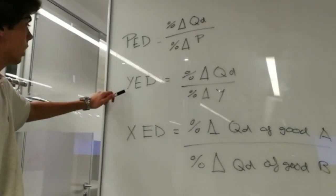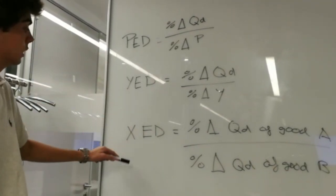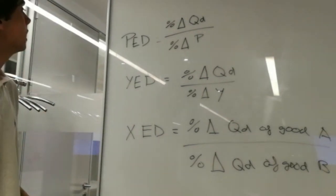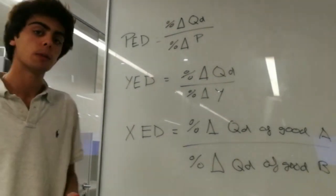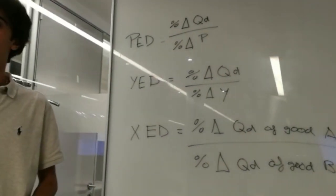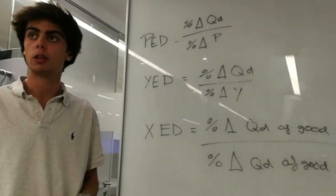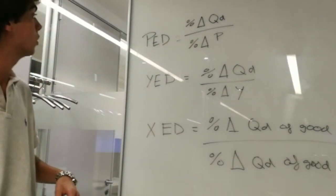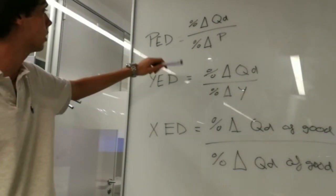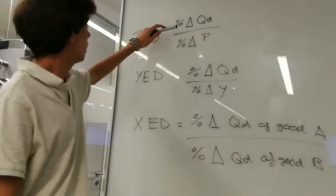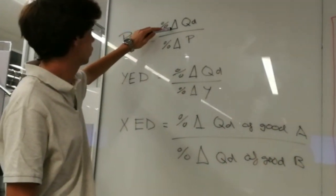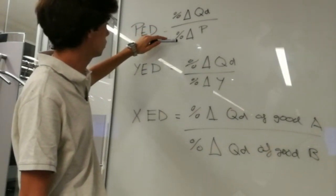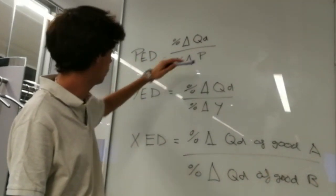Price elasticity of demand, income elasticity of demand, and cross elasticity of demand. The price elasticity of demand is a measure of how much the quantity demanded of a product changes when there is a change in the price of the product. The formula used to define the price elasticity of demand is the percentage of the variation of the quantity demanded divided by the percentage of the variation of the price.